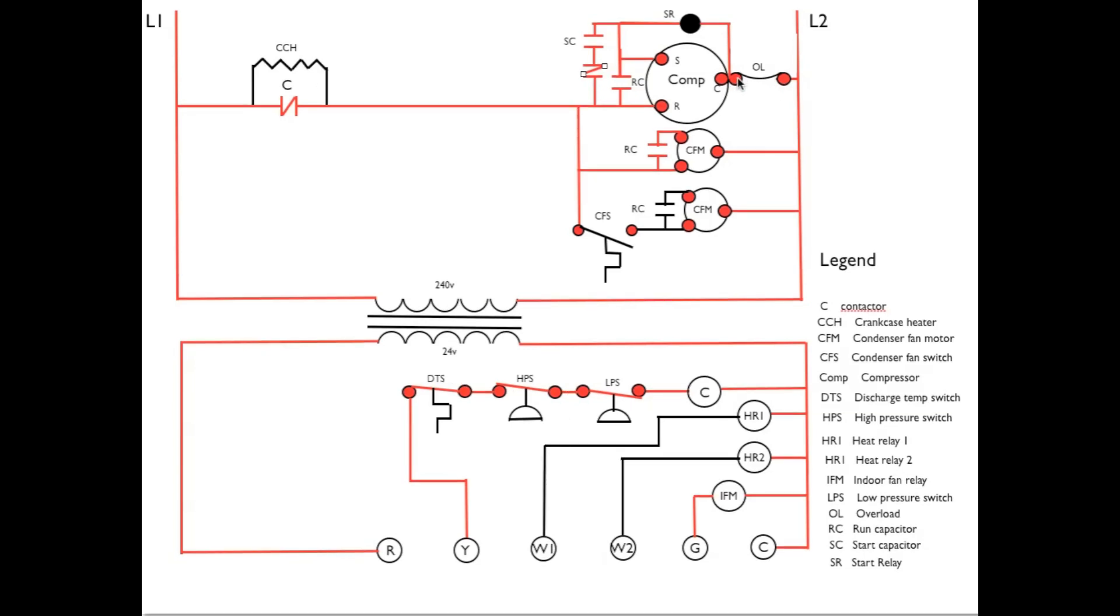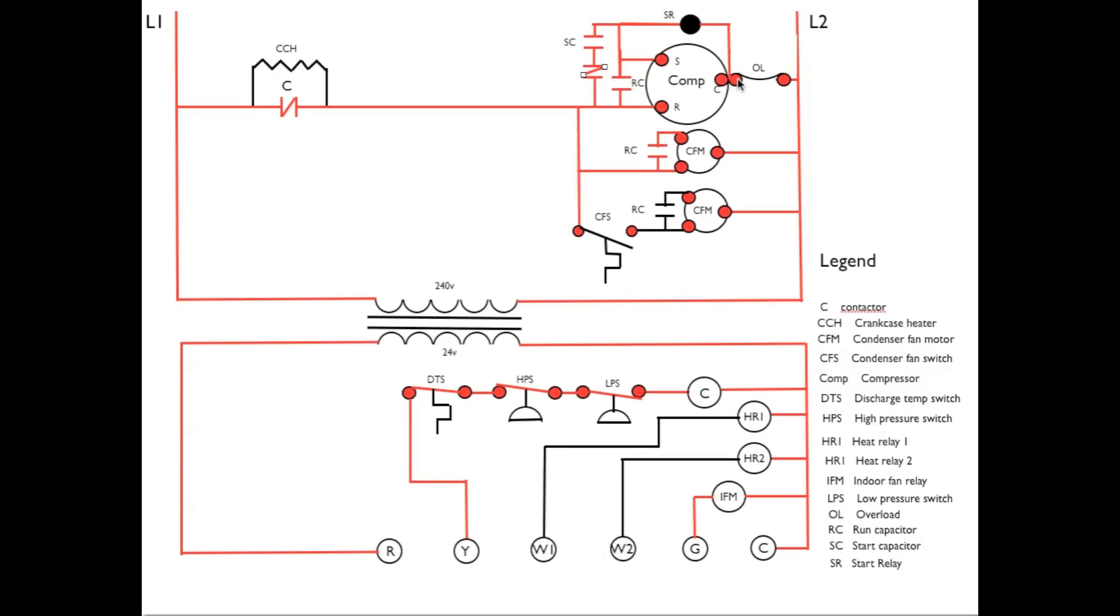which is going to shut down the common side of the compressor, which will shut it completely down, if there is an over temperature in the wiring going from C to L2. That would mean probably an overdraw in the compressor.